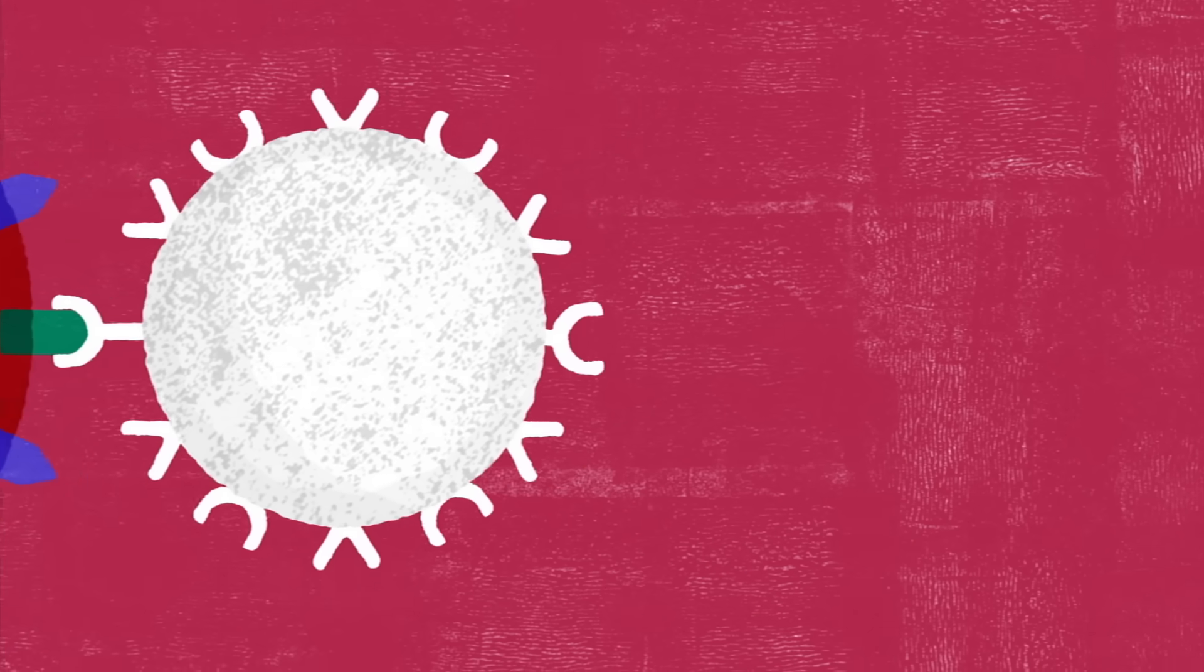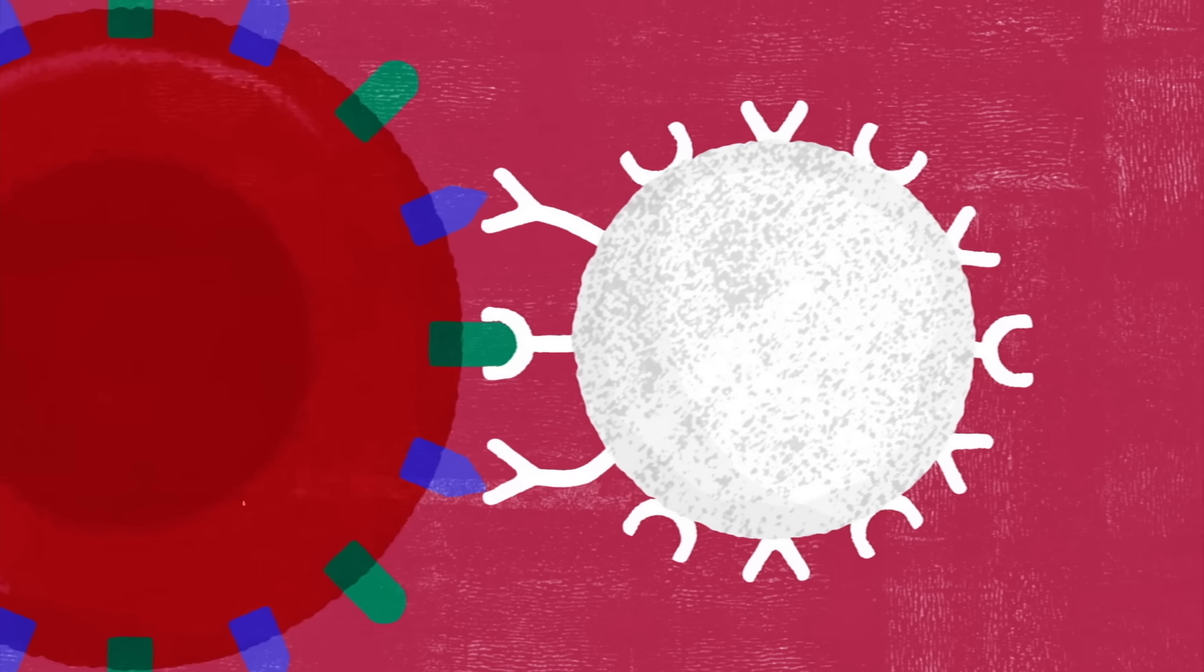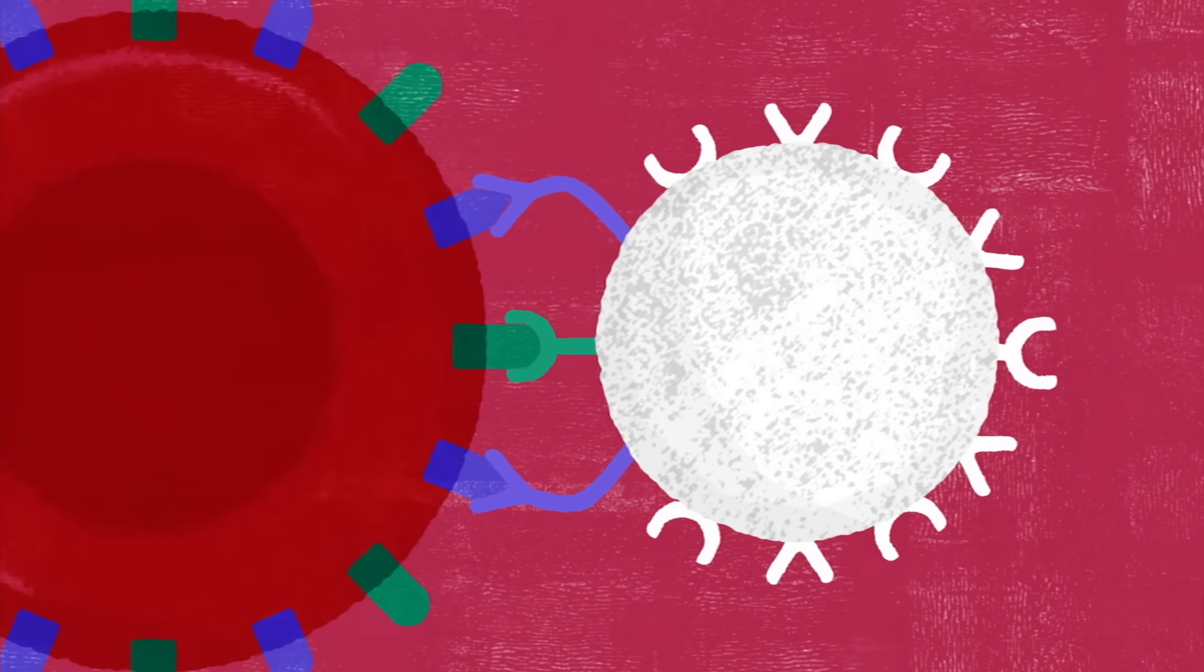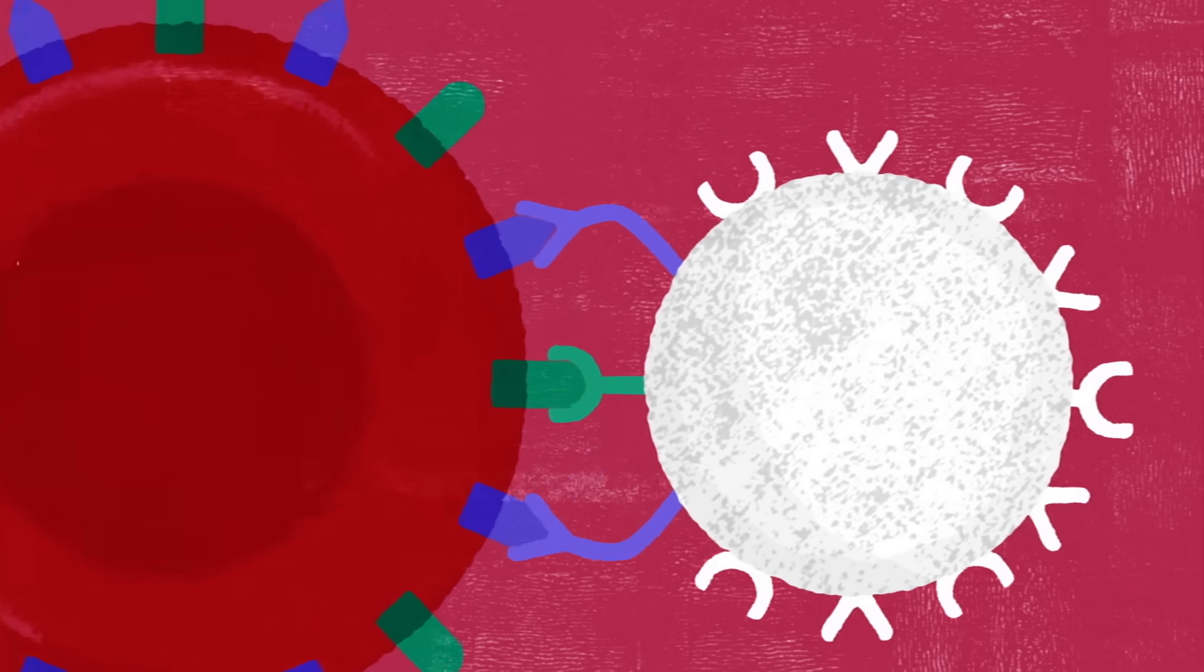Antigens serve as identifying markers, allowing the immune system to recognize your body's own cells without attacking them as foreign bodies. The two main kinds of antigens, A and B, determine your blood type.